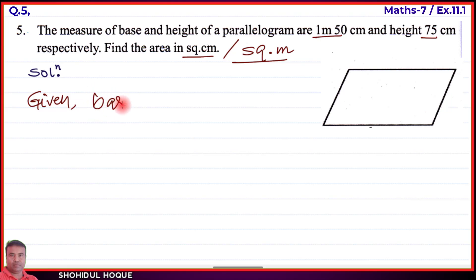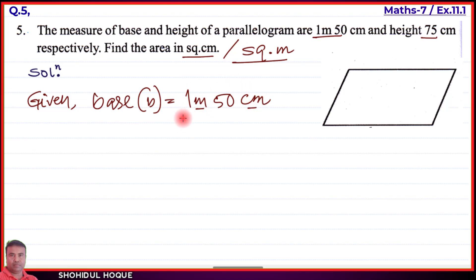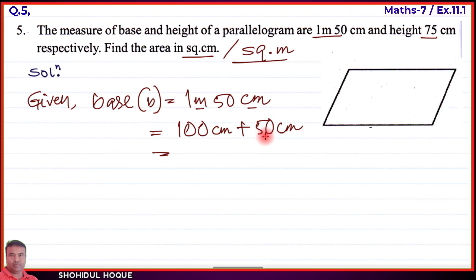Given: base (B) is equal to 1 meter 50 centimeter. Since the unit is in meters and centimeters, we need to convert everything to centimeters. So 1 meter equals 100 centimeters, plus 50 centimeters, which gives us 150 centimeters. So base B = 150 centimeters.